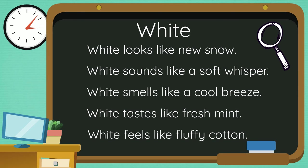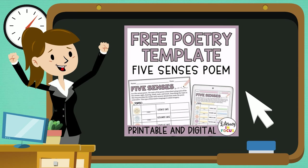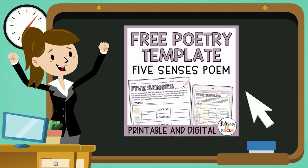Do you see the similes? The color white is compared to new snow, a soft whisper, a cool breeze, fresh mint, and fluffy cotton. Now it's your turn to write a five senses poem. Click the link in the description to download a free five senses poem template to help you get started.